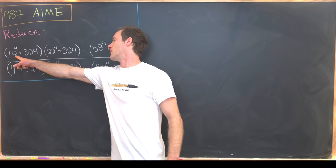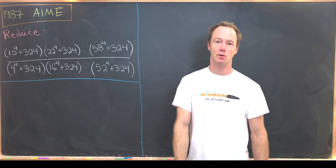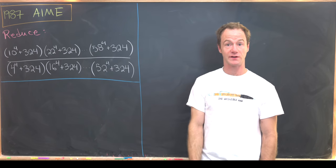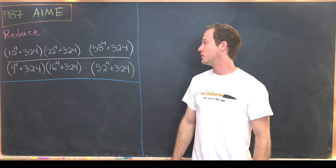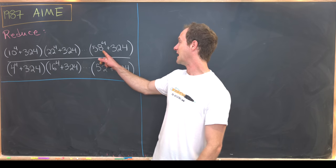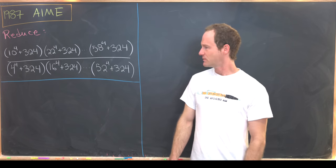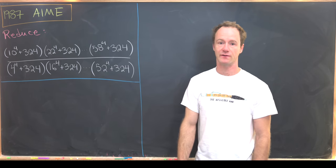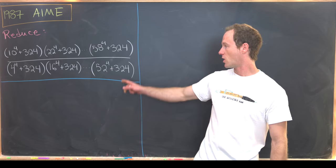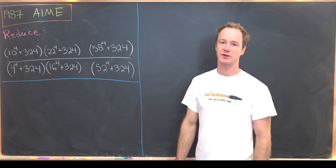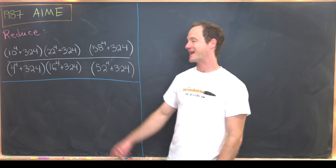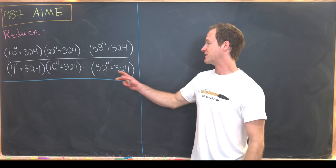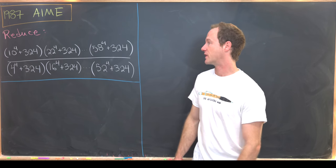Notice there's a gap of 12 between 10 and 22, and that sets up the pattern. So the next term would be 34 to the fourth, then 46 to the fourth, ending at 58 to the fourth. Then we've got a similar pattern in the denominator. We have 4 to the fourth plus 324, 16 to the fourth plus 324, all the way up to 52 to the fourth plus 324. So again we've got a gap between those things raised to the fourth power of 12, and we have the same number of terms in the numerator and the denominator.